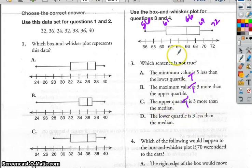Lower quartile is, here it is, 3 less than the median. No, that is not true. It's 5 less. So D is the one that's not true.